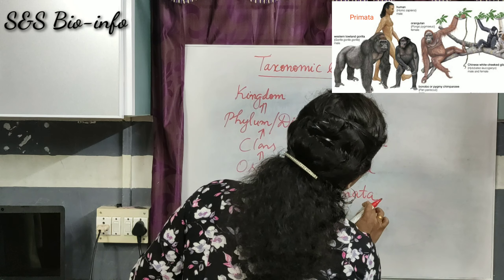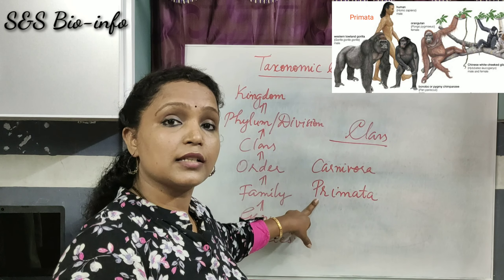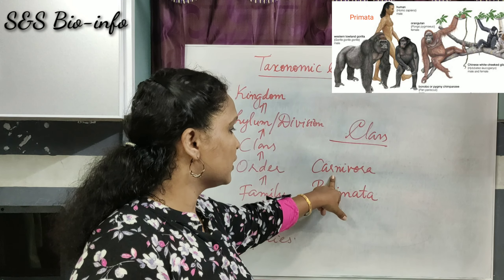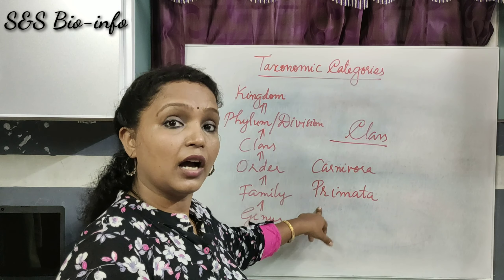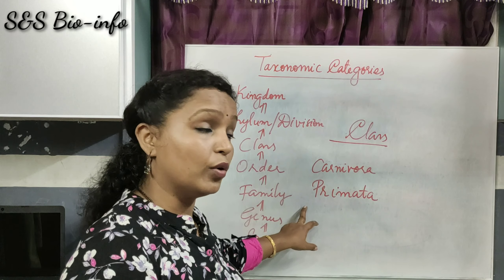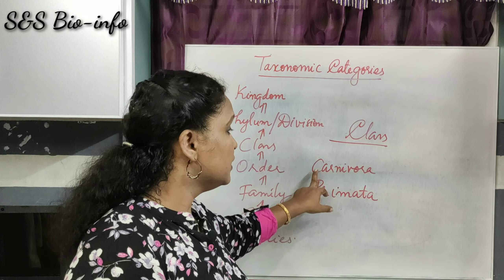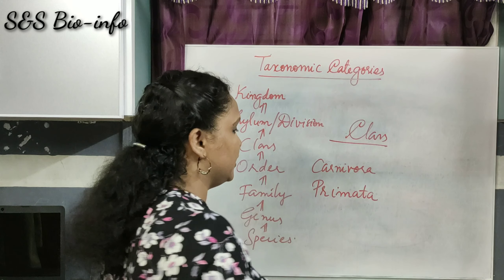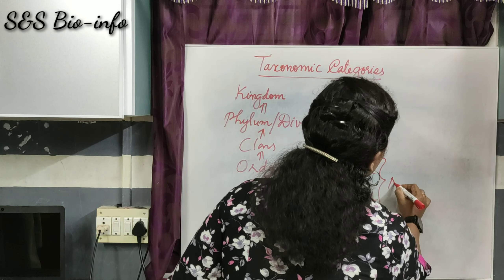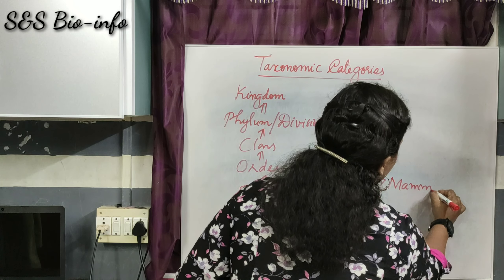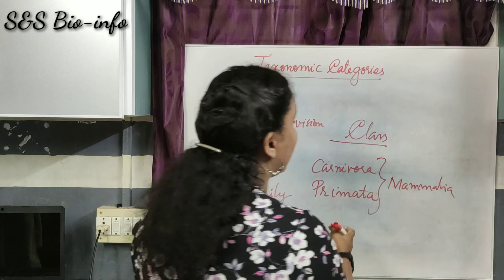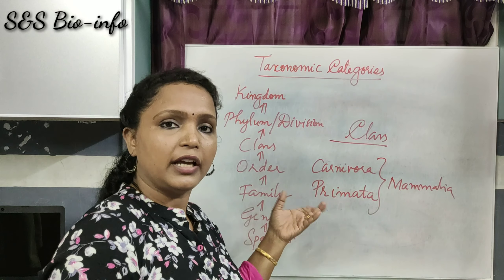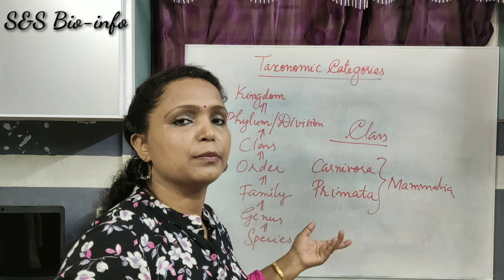Another order is Primata, which comprises apes, gorillas, monkeys, and human beings. Both Carnivora and Primata are closely related orders, and these two orders come under the same class Mammalia — because they have the features of mammals: they give birth to young ones.